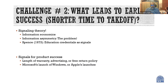Challenge two was: what leads to early success? What would trigger or reduce the time it takes for an OSS product to take off? What we relied on was the notion of signaling. It's a theory from information economics. Spence proposed it early on — outside the domain of technology or open source — around 1973, and he did receive a Nobel Prize for it.